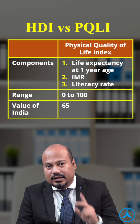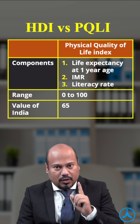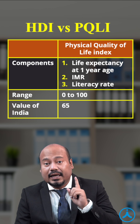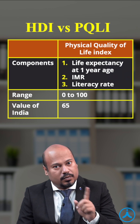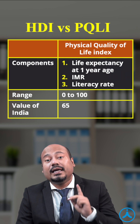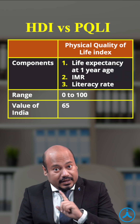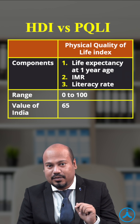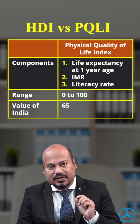In the case of the Physical Quality of Life Index, the components differ. Number one is life expectancy at age one — not at birth. Number two is the infant mortality rate — not income per capita. Number three is literacy rate.